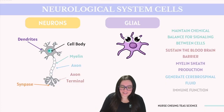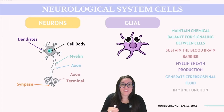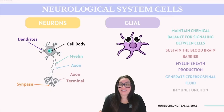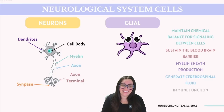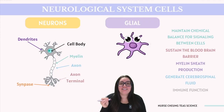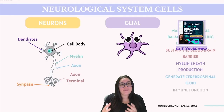Another essential cell type is glial cells. The word 'glia' derives from the Greek word for glue, as glial cells help hold neurons in place — but they are far more significant than that. Some glial cells help maintain the chemical balance necessary for signaling between cells and help sustain the blood-brain barrier. Others produce the myelin sheath, a protective coating that wraps around axons, insulating them and enhancing signal transmission. Some glial cells generate cerebrospinal fluid, which protects the brain and plays a crucial role in maintaining homeostasis, while certain glial cells are integral to immune function within the nervous system.